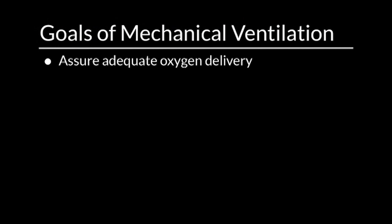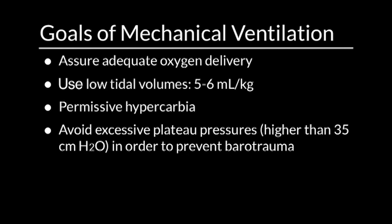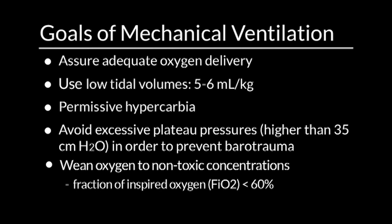The general goals of mechanical ventilation include assuring adequate oxygen delivery. General strategies also applicable to asthma are: low tidal volumes of about 5 to 6 ml per kg, some degree of permissive hypercarbia, avoiding excess plateau pressures above 35 cmH2O to prevent barotrauma, and weaning oxygen to non-toxic concentrations. We try to wean FiO2 to less than 60%, even in children.